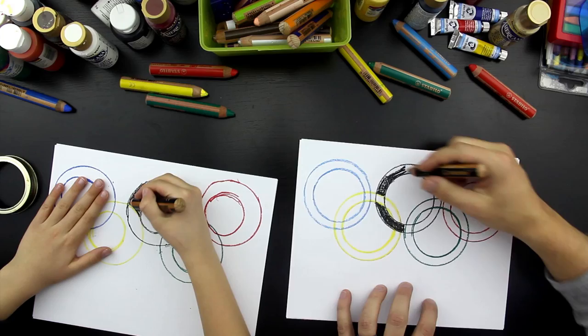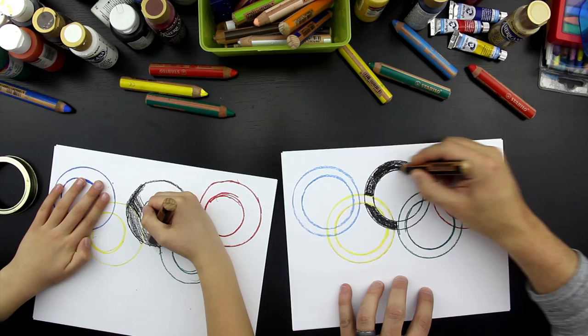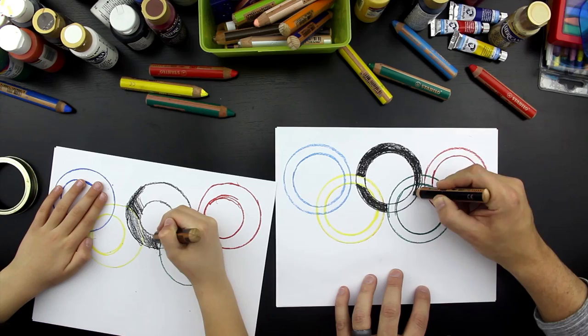So, yours will be a little easier version. And then, mine will be a little bit more of a more difficult version. Okay. So, when we get to the green, I am going to draw through the green. But, I want you to not draw through the green. So, the green is going to be on top.